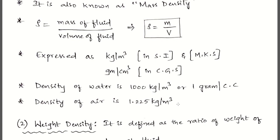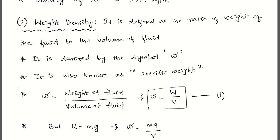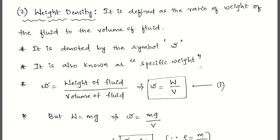Next, let's go to the second property: weight density. Mass density was mass of fluid to volume of fluid. Weight density is the ratio of weight of the fluid to volume of the fluid, denoted by the symbol small w. This weight density is also known as specific weight — remember this, as the term specific weight is used most of the time in fluid mechanics.